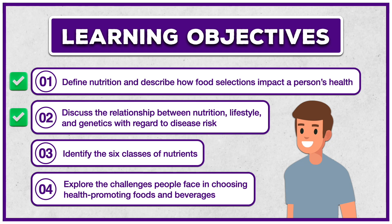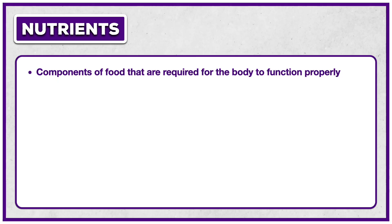That completes our first two learning objectives. We defined nutrition and described how food selections impact a person's health. We also discussed the relationship between nutrition, lifestyle, and genetics regarding disease risk. Now we'll go ahead and identify the six classes of nutrients. Nutrients are components of food that are required for the body to function properly. Each food is made up of different nutrients, we eat food to obtain nutrients, and then our body uses those nutrients to support the processes we need to survive and thrive.